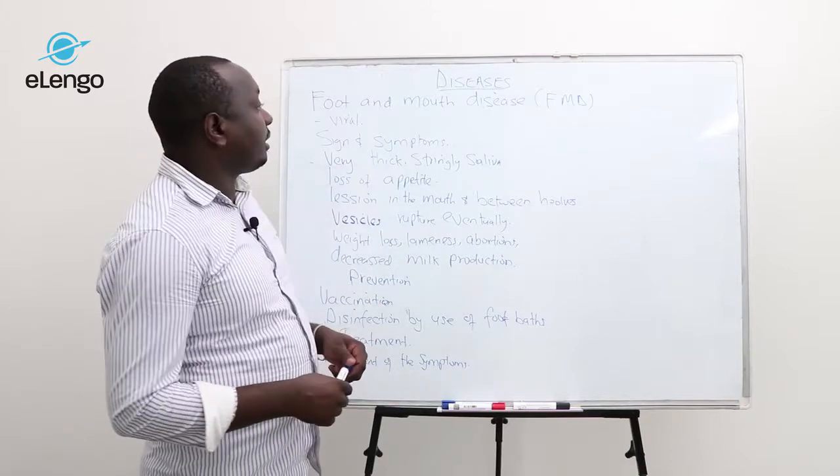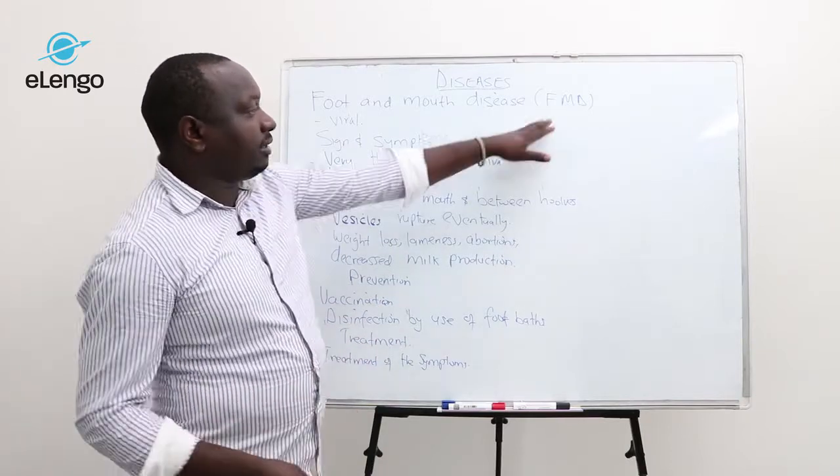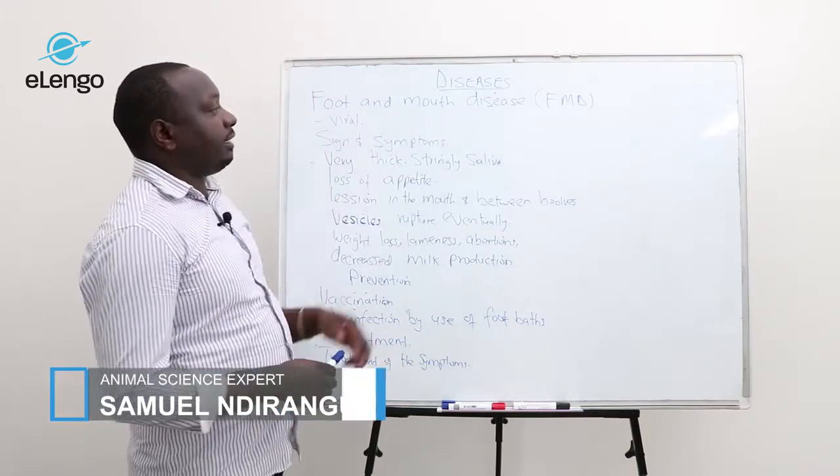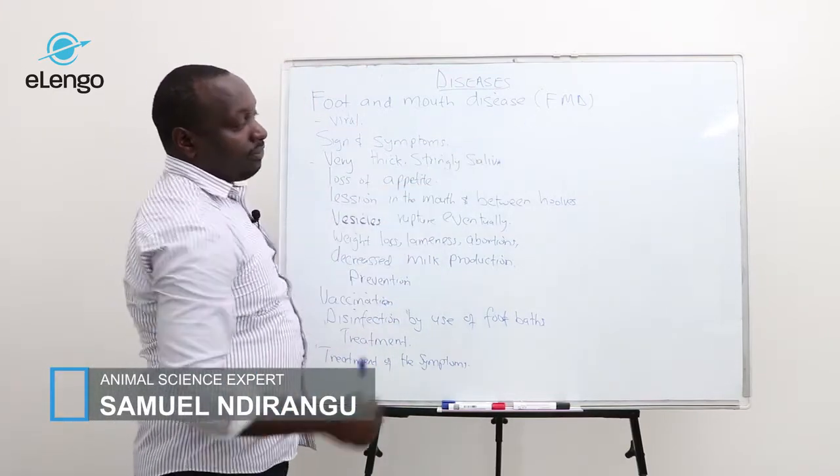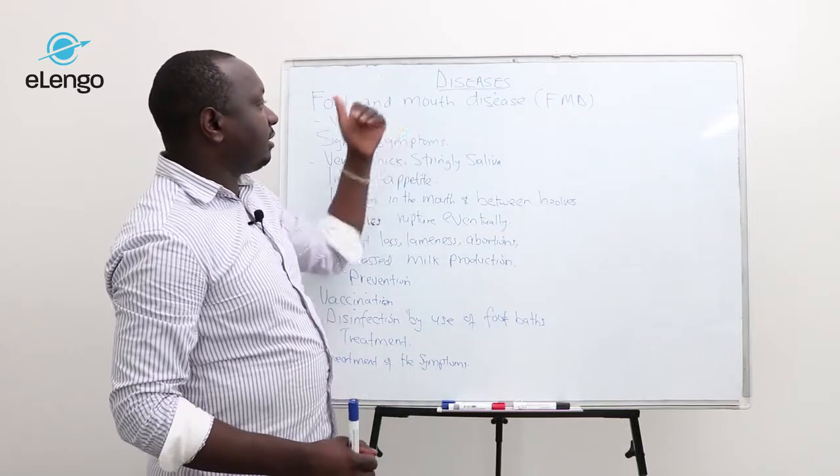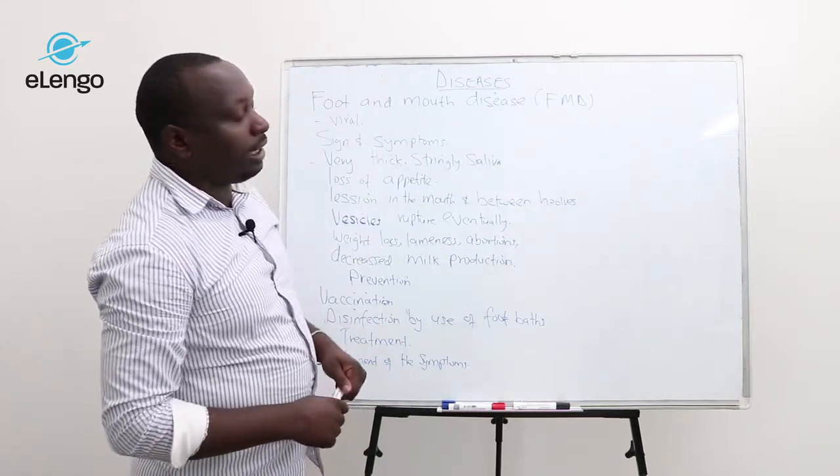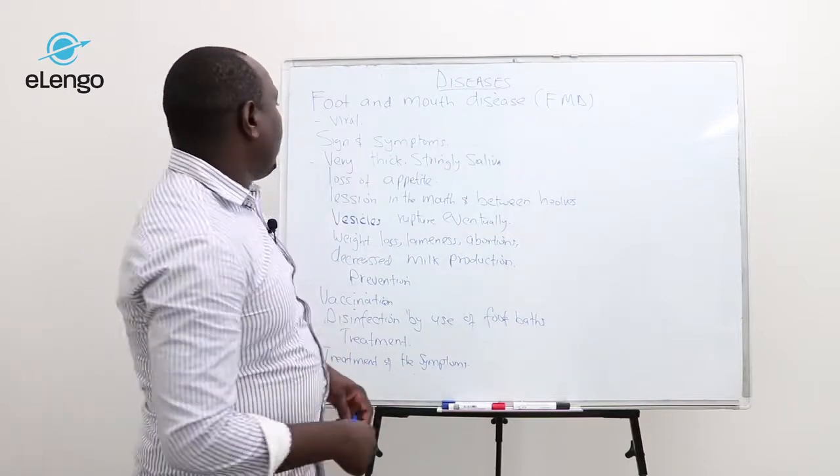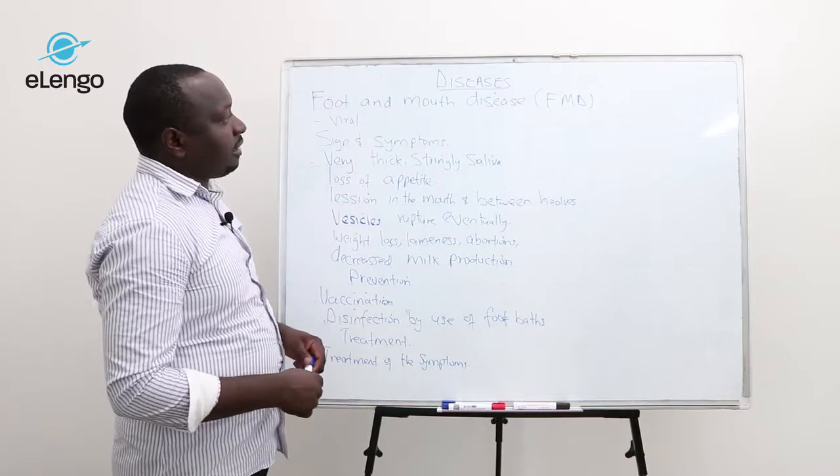Our next disease is Foot and Mouth Disease, abbreviated as FMD. It's a viral disease, and when a farmer notices symptoms in their flock, they should always report to the authorities. The symptoms of this disease are as follows.